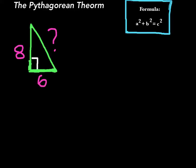Today I am going to show you step-by-step how to find the missing hypotenuse of a right triangle using the Pythagorean Theorem formula. The formula for the Pythagorean Theorem is a squared plus b squared equals c squared.